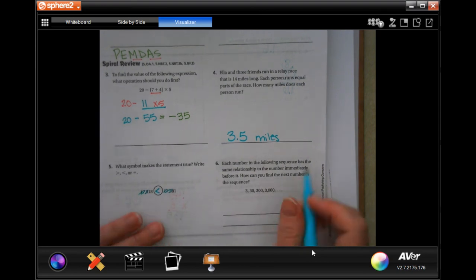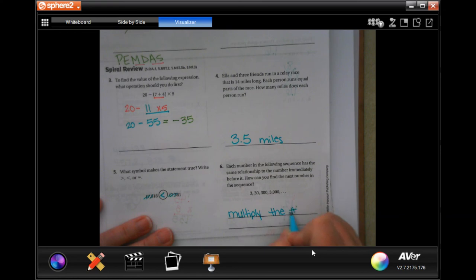Each number in the following sequence has the same relationship to the number immediately before it. How can you find the next number in the sequence? I would find out how I get from 3 to 30, which 3 times 10 is 30. 30 times 10 is 300, and 300 times 10 is 3,000. So, I would multiply the number by 10.